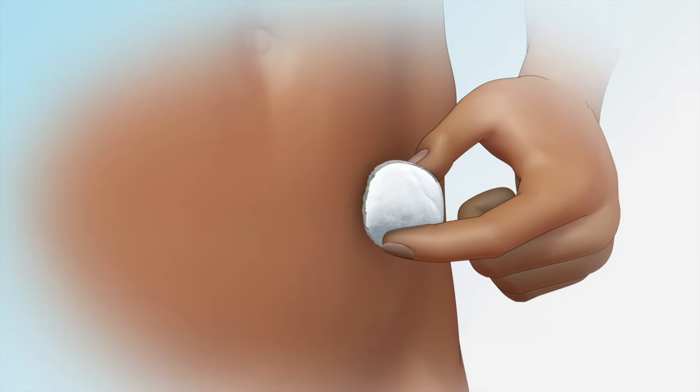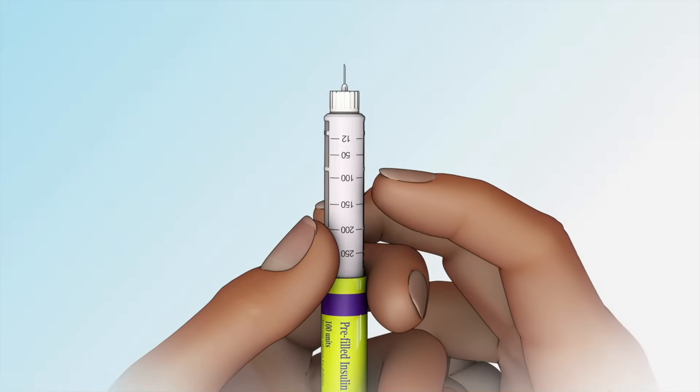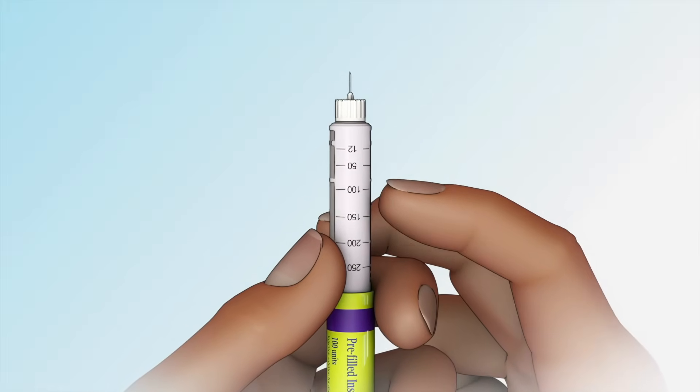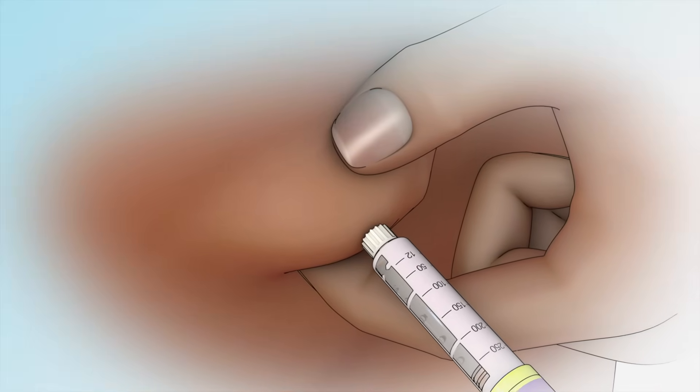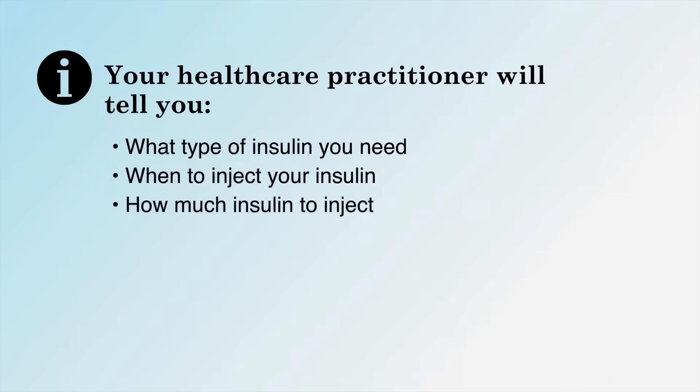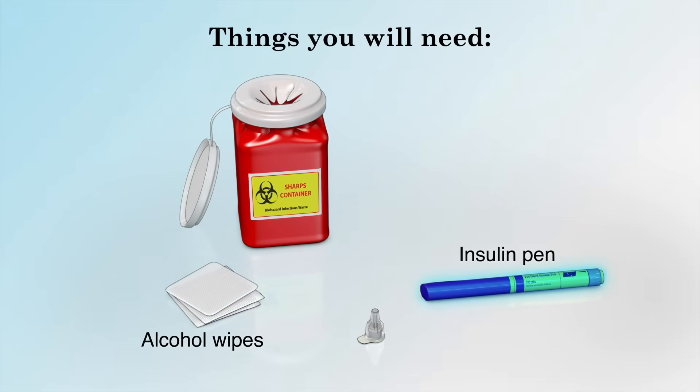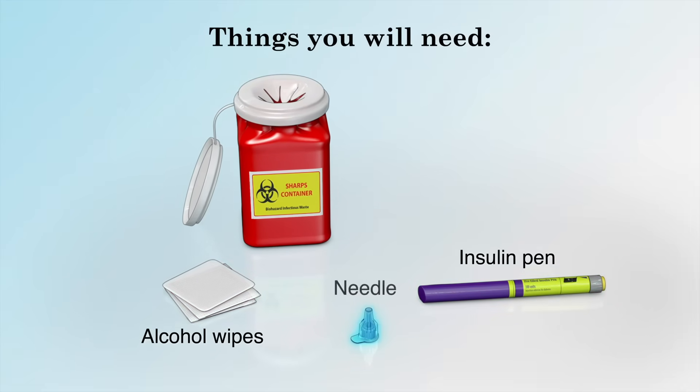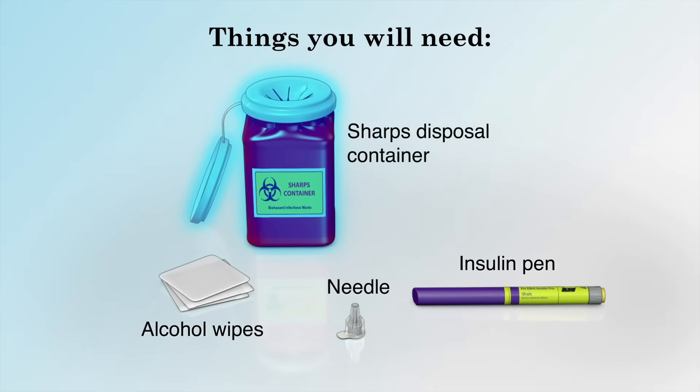Injecting insulin with an insulin pen involves choosing an injection site, preparing and priming your pen, and then injecting the insulin into your body. Your healthcare practitioner will tell you what type of insulin you need as well as when and how much you need to inject. You will need alcohol wipes, your insulin pen, a new needle for each injection, and a sharps disposal container.